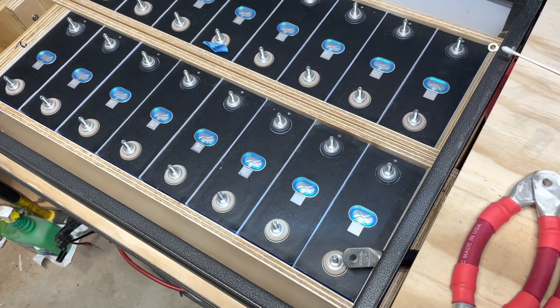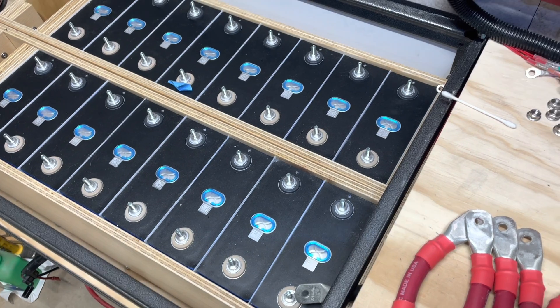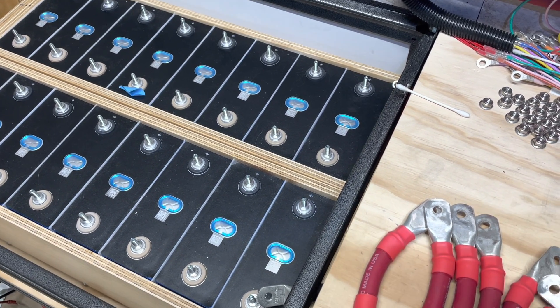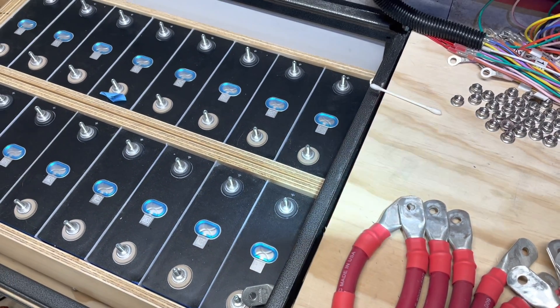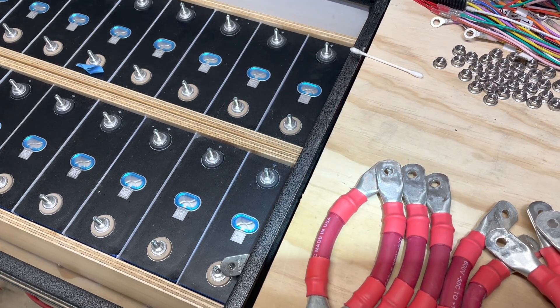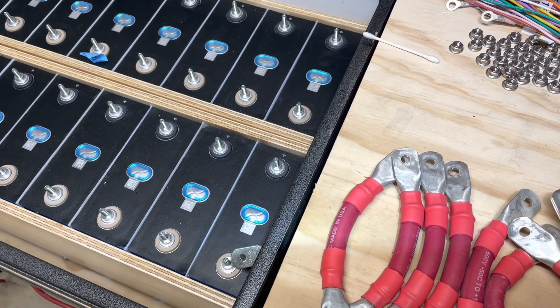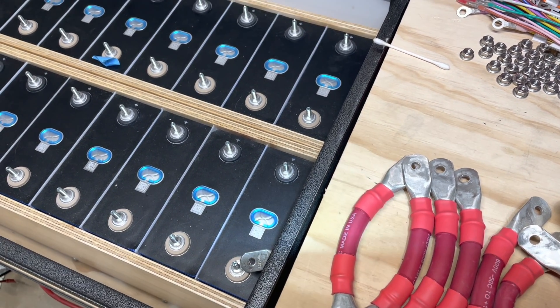Now I'm gonna clean the terminals one more time, put a little bit of Ox-Gard on it. Or I have some carbon contact solution, so I don't know which I'm going to do. I might do half and half and see if there's a difference. Anybody have any ideas? Put it down below, because I'm kind of curious to see what works better.